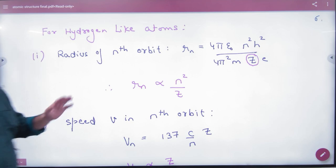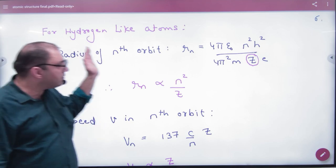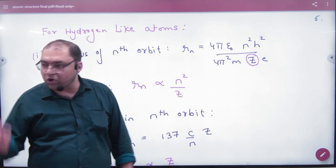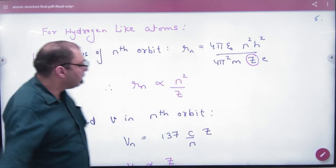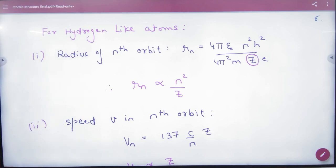For hydrogen-like atoms, Z will come in the formulas. Just remember, the rest of the formula is the same, just with Z. So this means the value of the radius is proportional to N² by Z.